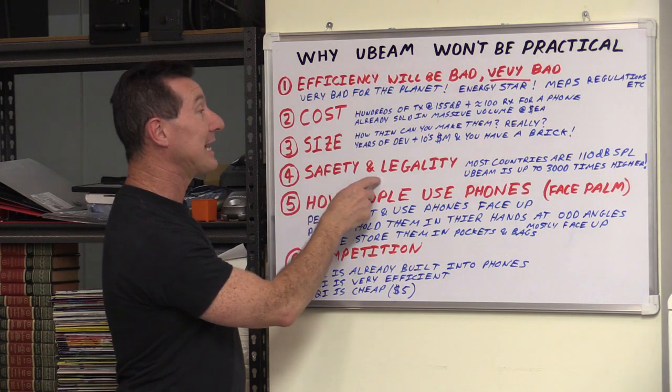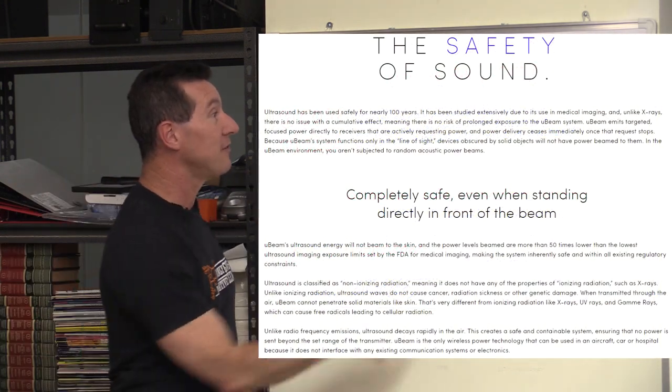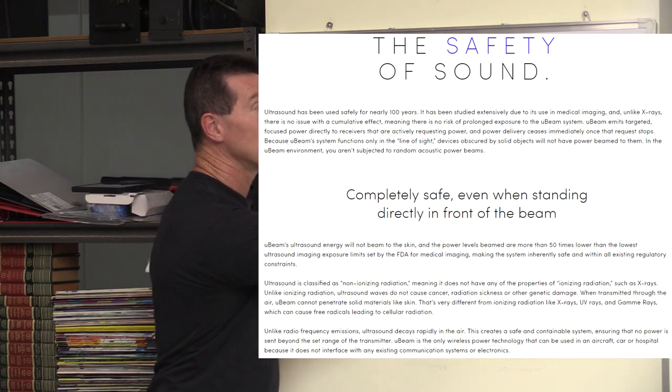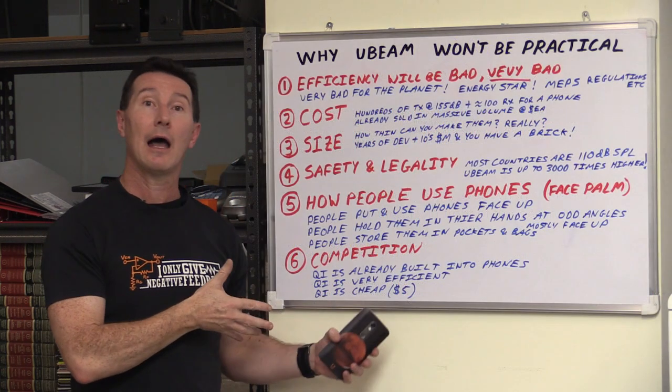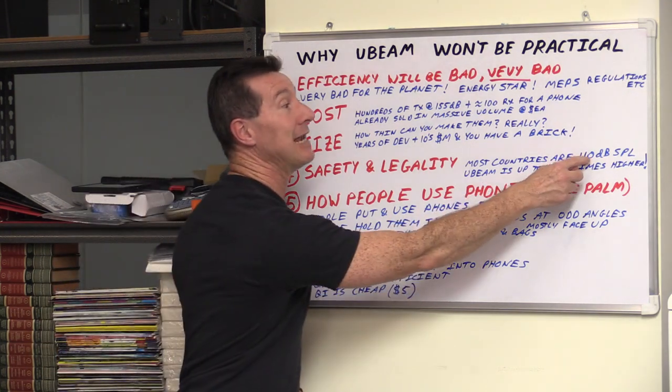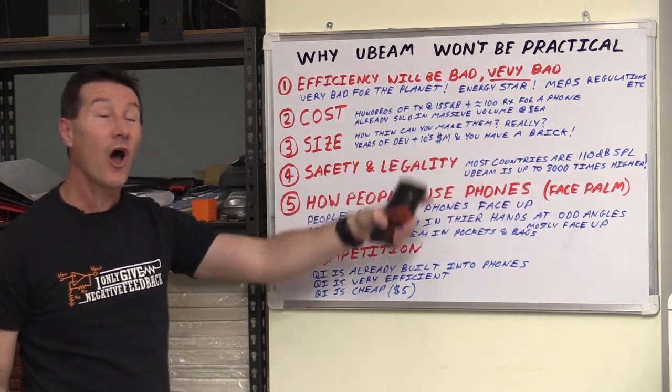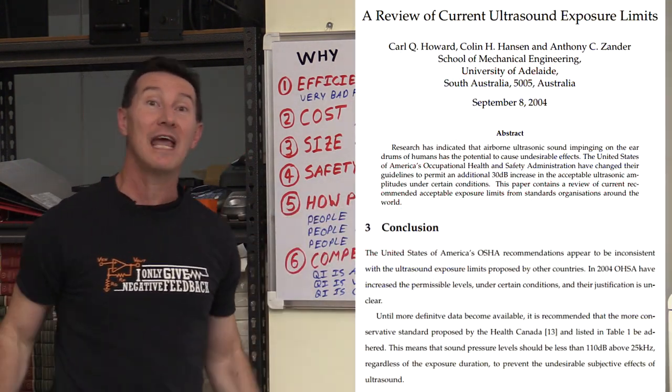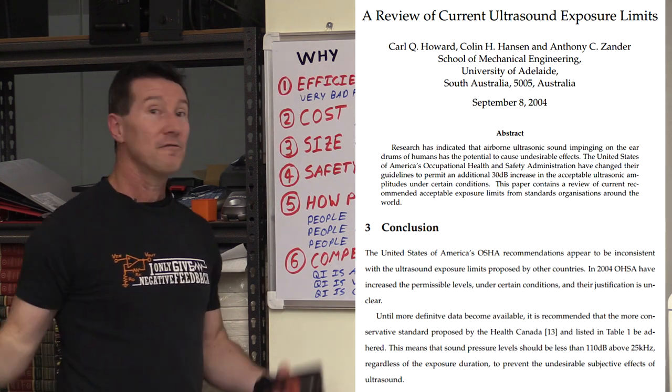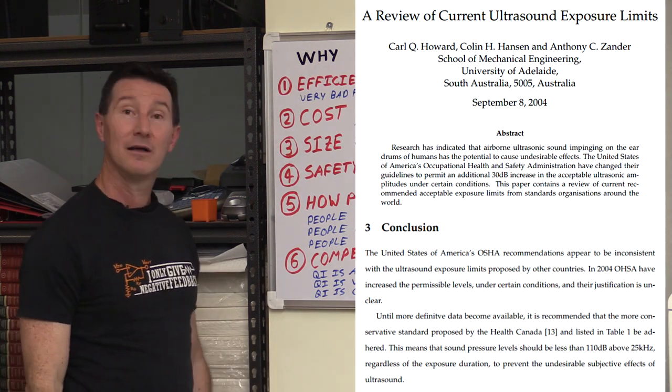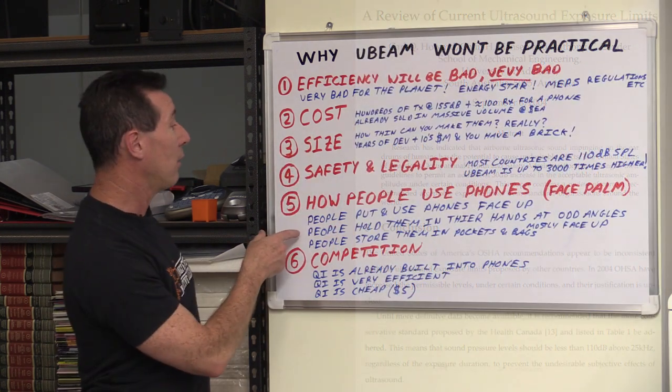And safety and legality. Let's have a look at that. They're on their website. It's all about safety. But most countries actually have either legislation or recommended safe levels of 110 dB SPL. So U-beam is up to 3,000 times higher than what almost every country recommends as a safe limit for ultrasonics. It's ridiculous. Don't let them convince you otherwise on the website. It's just bullshit and waffle.